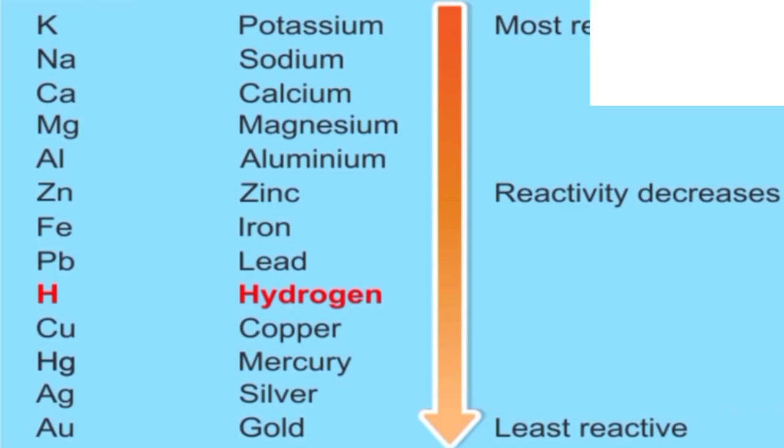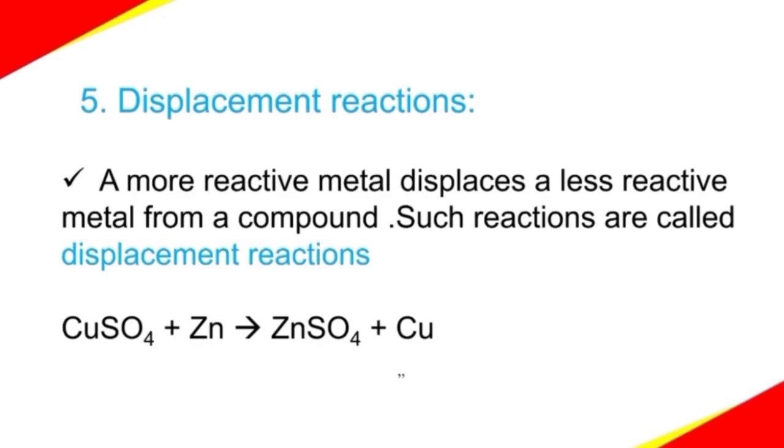To have better idea, here we go with metal reactivity series once again. In this, can you find out where is zinc and where is copper? Yes, zinc is above copper in the reactivity series. Hence, it can displace copper from its compound. Look at the equation once again to have a better understanding. Copper sulfate plus zinc gives zinc sulfate plus copper.